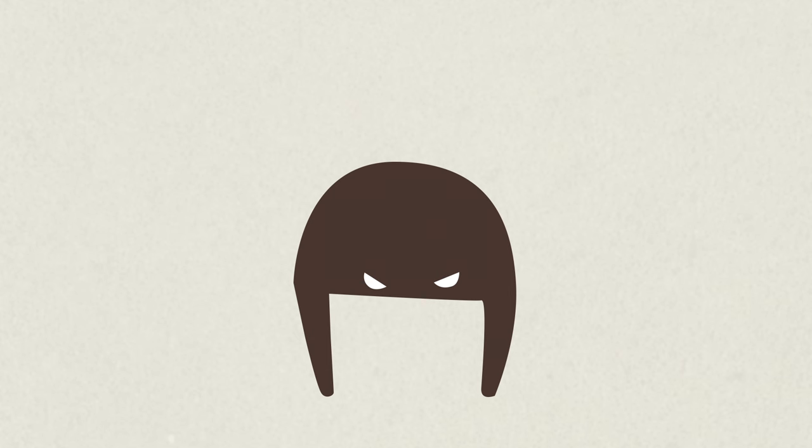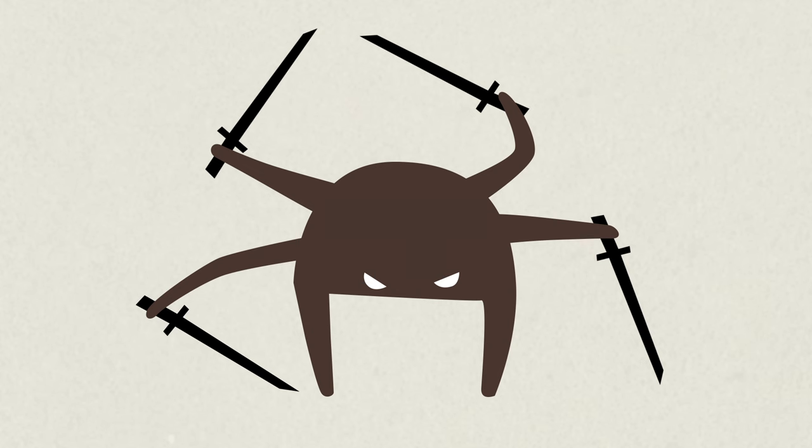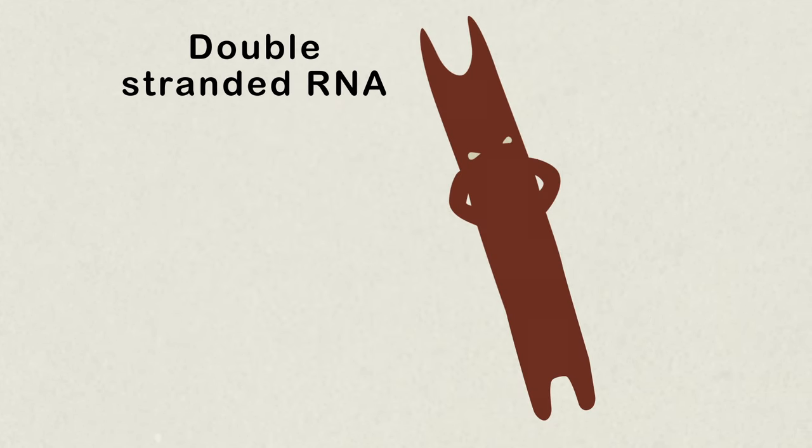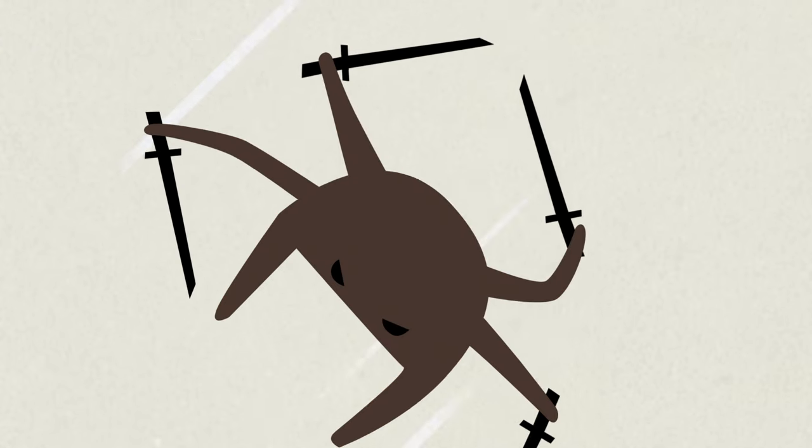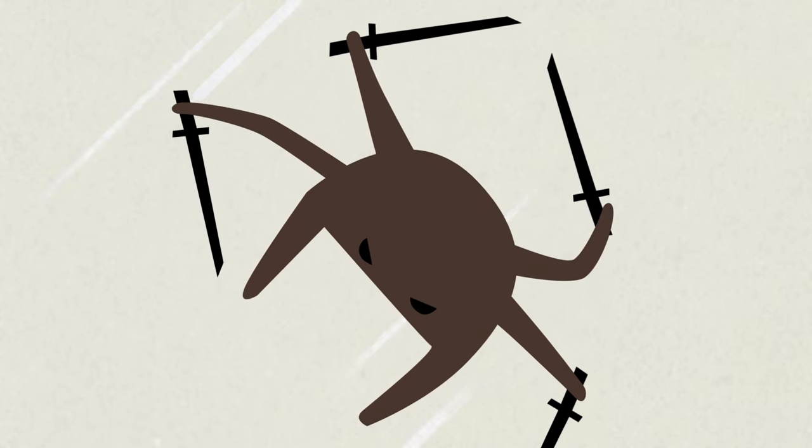Thankfully, your cells have the perfect knives for just this kind of job. When the cell finds or produces long, double-stranded RNA molecules, it chops these molecules up with a protein aptly named Dicer.